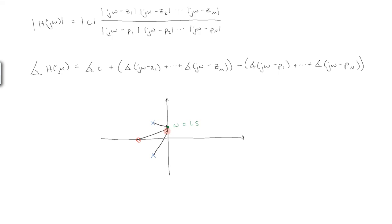It's going to be these vectors. And then for the magnitude, we're going to look at the ratio of the magnitudes of the zeros, the zero vectors here, let's call this one m1, its magnitude, this is m2, and this is m3.